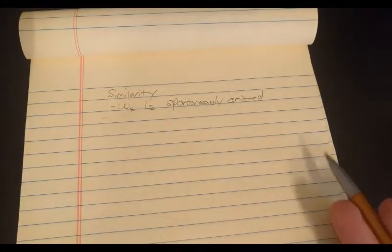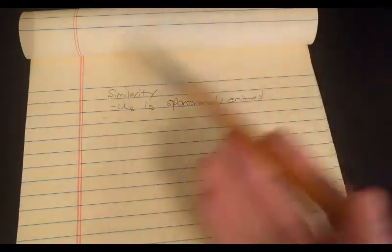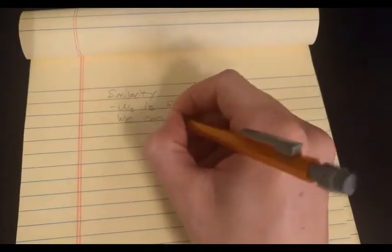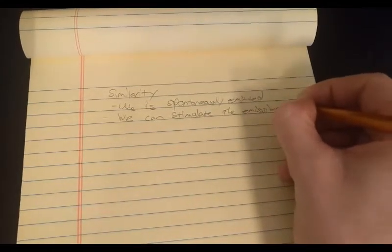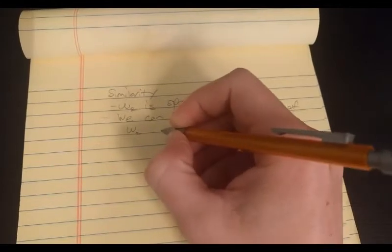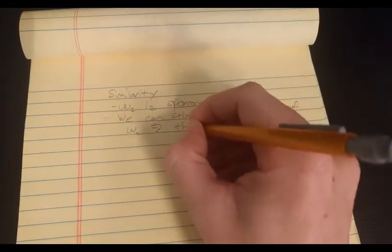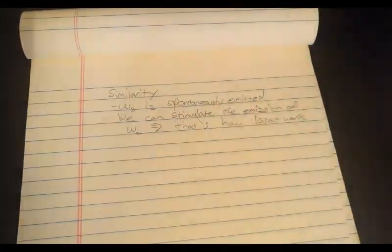But actually, we can stimulate the emission of omega two by providing an electric field with a frequency omega two. So we would actually provide two electric fields. One with omega one, and one with omega two. So if we're thinking about fluorescence, we can stimulate the emission of the photon of omega two. And that's how lasers work, essentially.